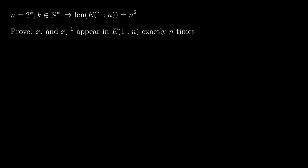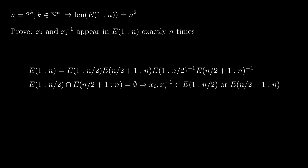We can also prove that x sub i and x sub i inverse appear exactly n times. Let's check it for n equals 4. Now let's prove the general case. x sub i can appear whether in e applied to the first half of the interval or in e applied to the second half of the interval since they do not intersect. Inductively, x sub i appears n over 2 times in one of these halves, which leads us to the conclusion.